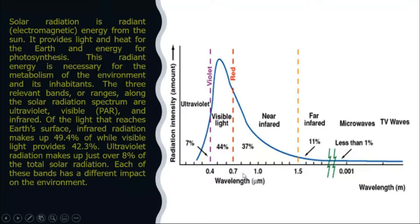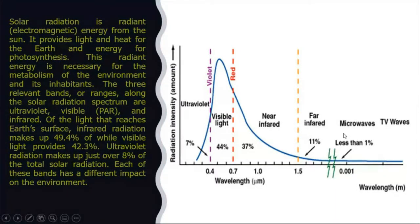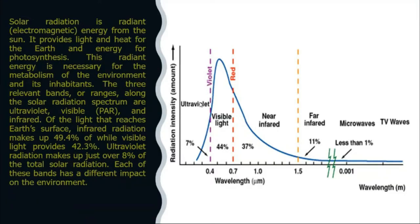So these three spectrums — ultraviolet radiation, visible light, and infrared — these three types of electromagnetic radiations share the major portion of the spectrum we receive from the Sun. There are also microwaves with very long wavelengths in meters, but most of the part we will be discussing for harnessing solar energy is visible light and infrared radiation.